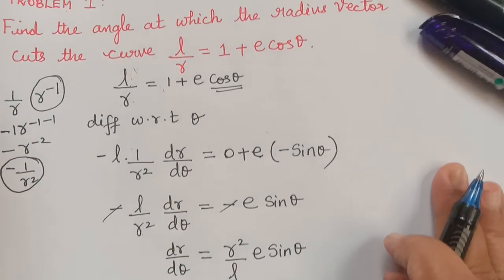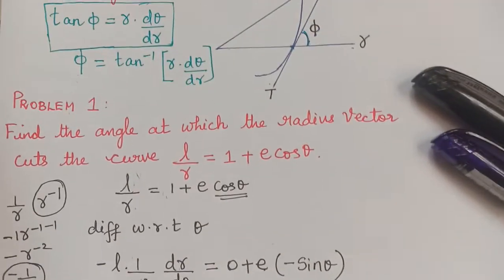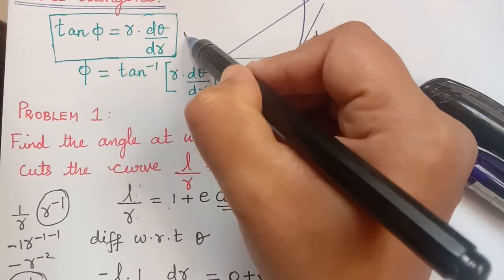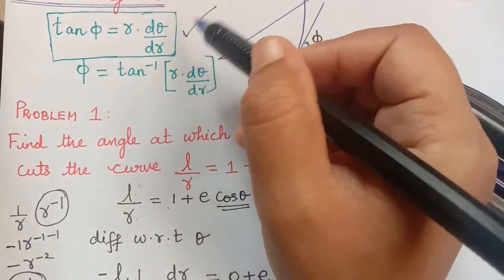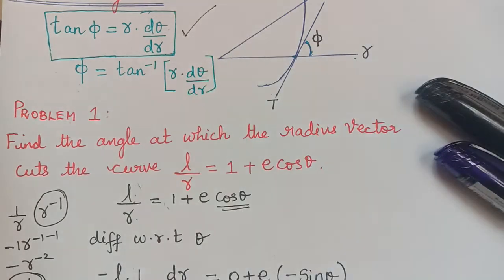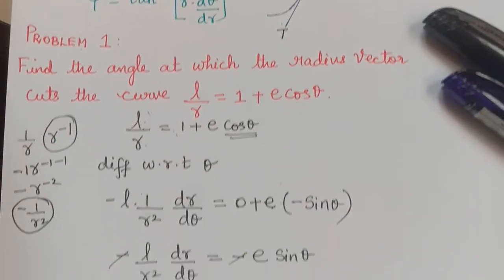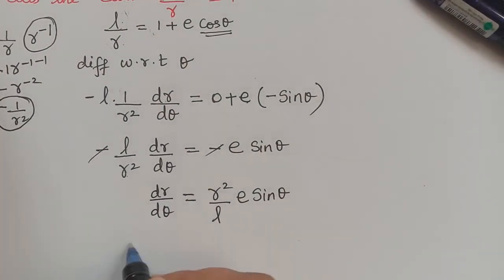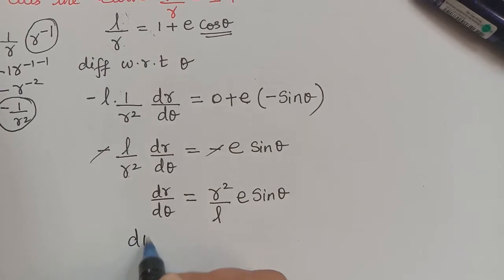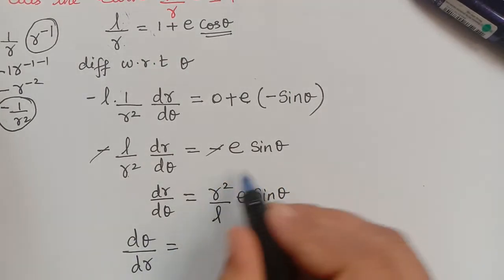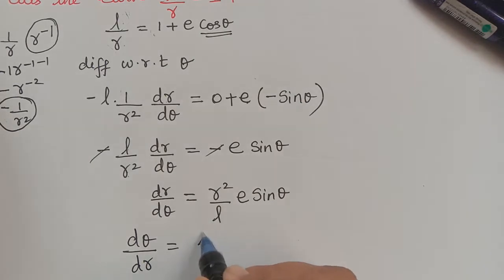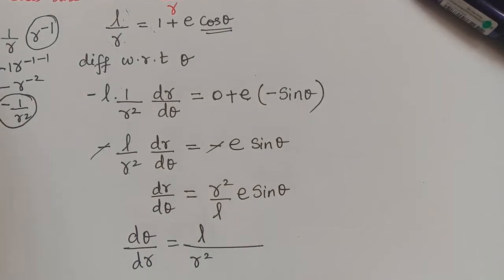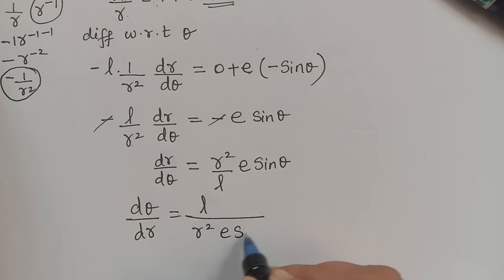But in the formula what we require is dθ/dr, not dr/dθ. So we will be requiring dθ/dr. From the expression for dr/dθ, taking the reciprocal, dθ/dr = l / (r²·e·sinθ).